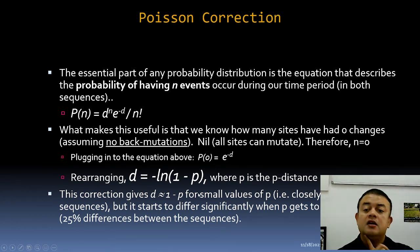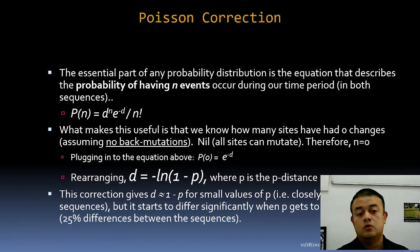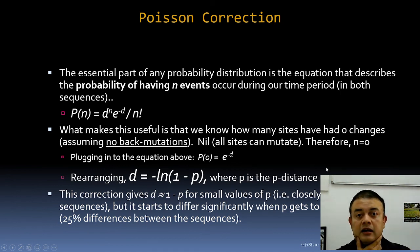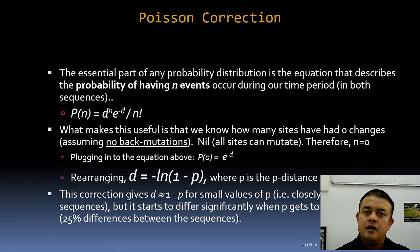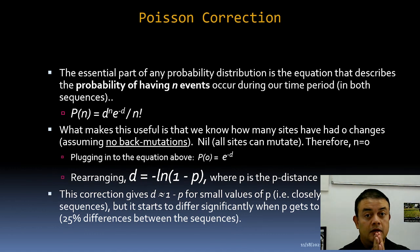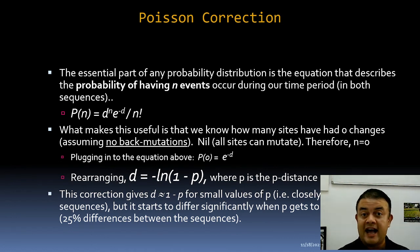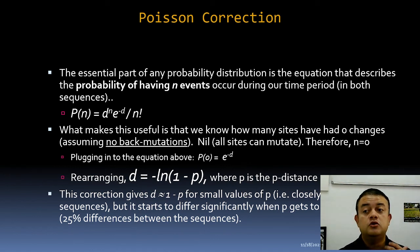This correction gives a d value close to p for small values of d — less than 0.25. If the p-distance is less than 0.25 (i.e., less than 25% difference between sequences), such as human versus chimp, the Poisson correction is adequate. But for more distantly related sequences like human and mouse or cat, where differences exceed 25%, the Poisson correction is no longer valid and more sophisticated models of molecular evolution are needed.